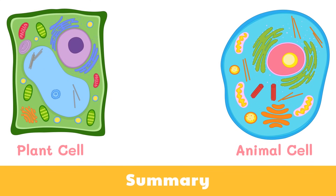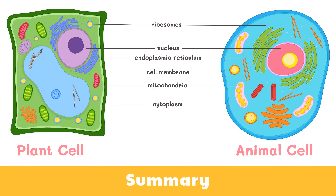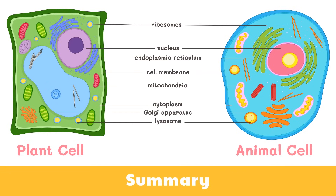As a recap, the three basic components of the cell are the cell membrane, nucleus, and cytoplasm. Within the cytoplasm are the organelles: mitochondria, ribosomes, smooth and rough endoplasmic reticulum, Golgi apparatus, lysosomes, and vacuole. Those are the very basic organelles of the cell.